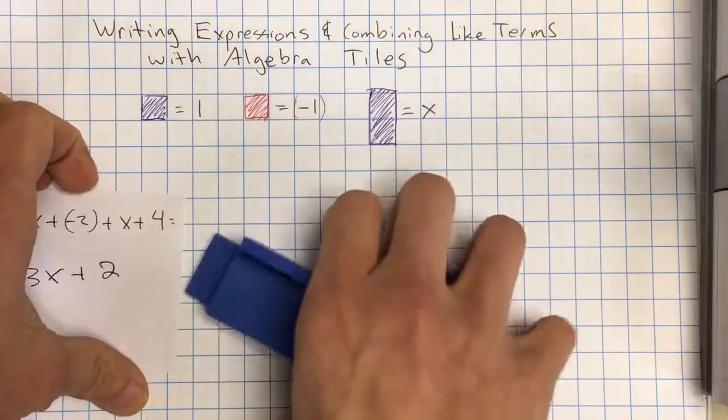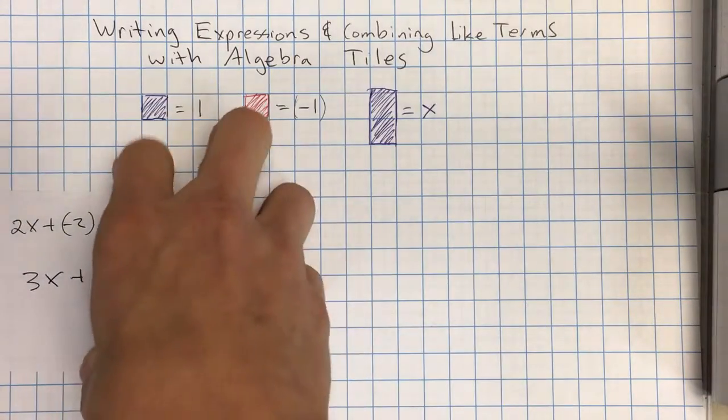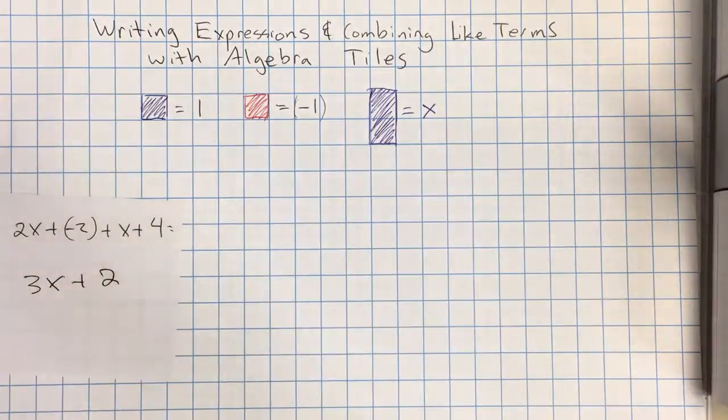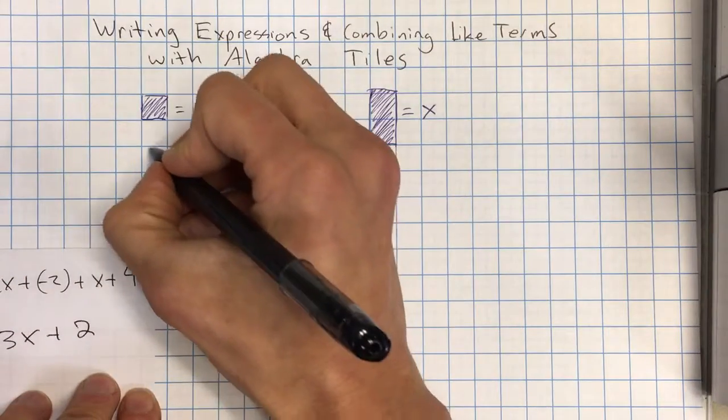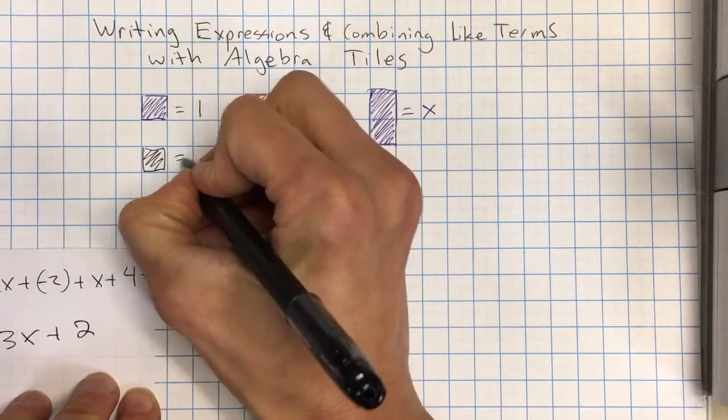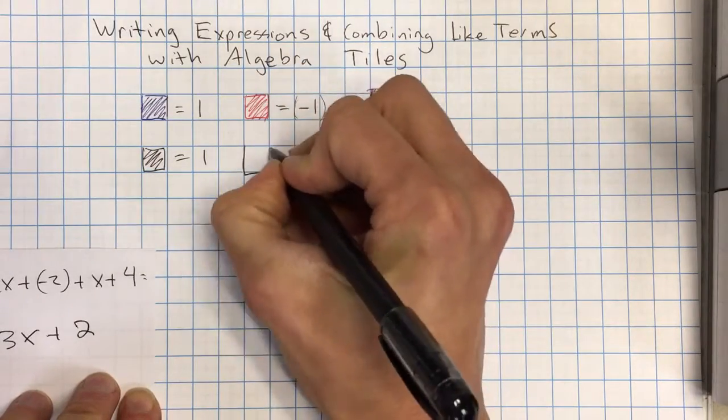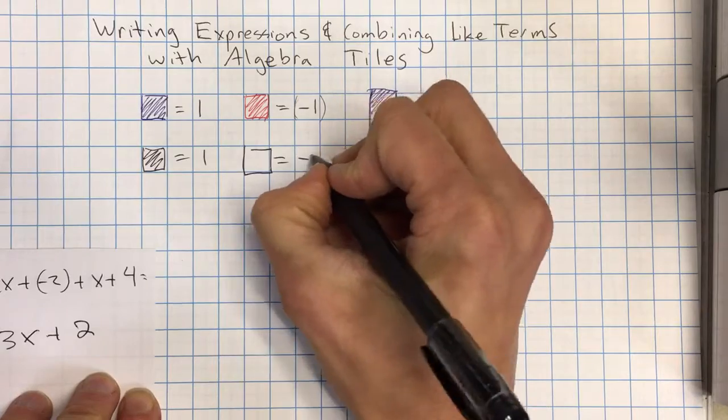Now you can also do this by writing. If you are drawing this, I would probably just use, unless you want to use colored pencils, you could use like what we used before where we said a square filled in is equal to 1. A border of a square is equal to negative 1.